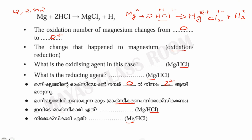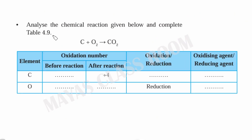If you have a question about a chemical equation, find the oxidation number for each element. The key point is: the substance whose oxidation number increases is being oxidized, and the substance whose oxidation number decreases is the oxidizing agent. Analyze the chemical reaction given below and complete the table.